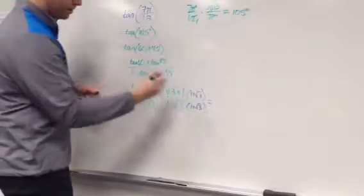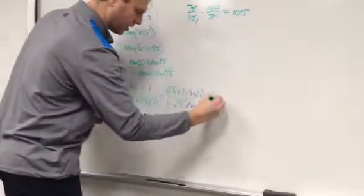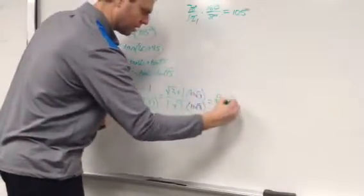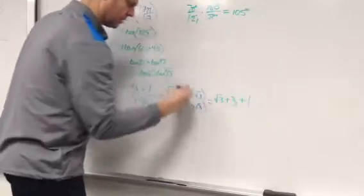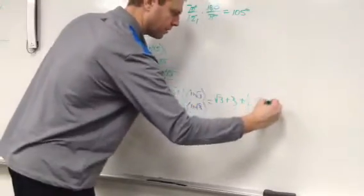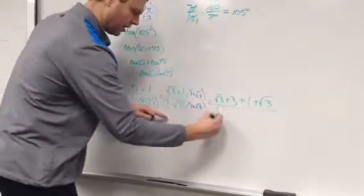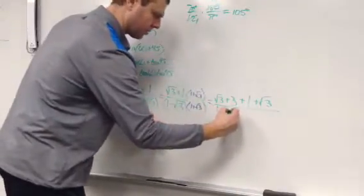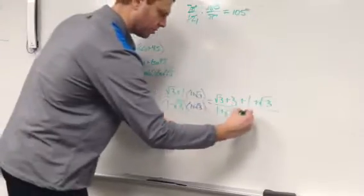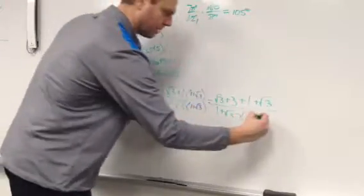I'm going to FOIL. So root 3 plus 3 plus 1 plus root 3 over 1 plus root 3 minus root 3 minus 3.